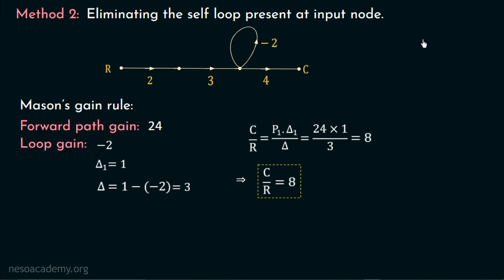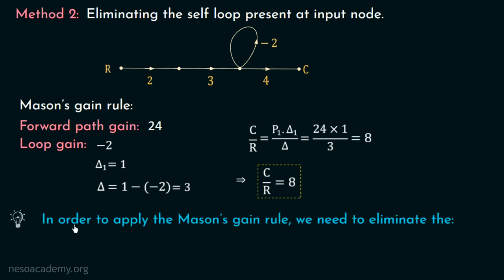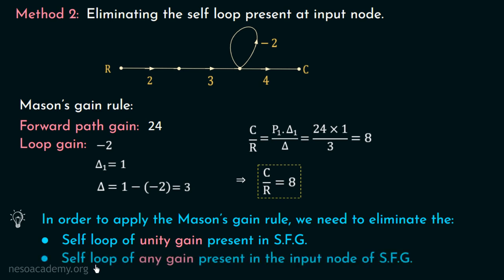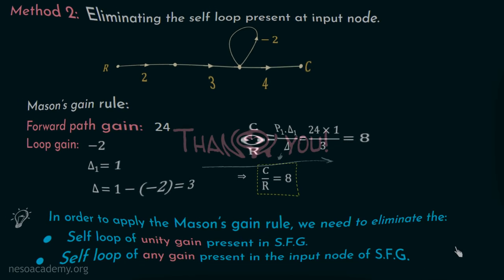In this way, we are done with the discussion of the limitations of Mason's gain rule and the methods to overcome them. In conclusion, to apply Mason's gain rule correctly, we must eliminate any self-loop of unity gain in the SFG, and any self-loop of any gain at the input node of the SFG. Thank you for watching this lecture.